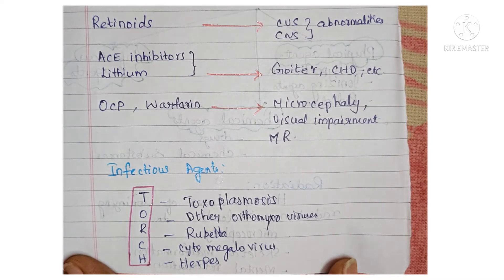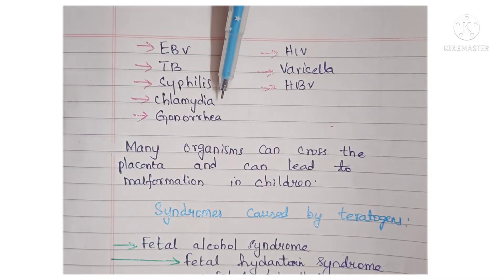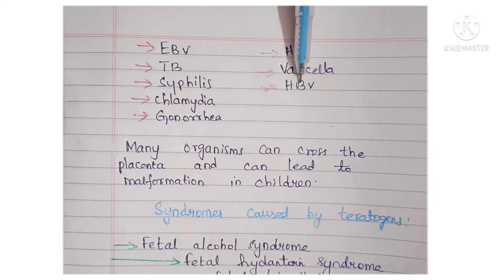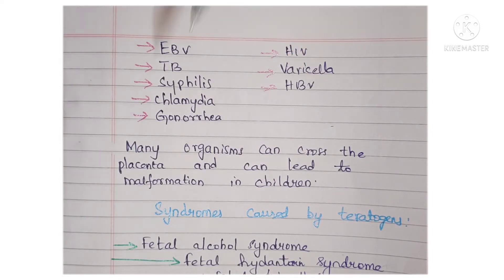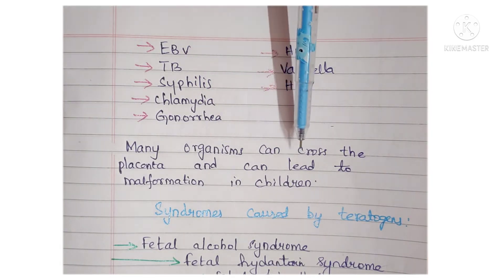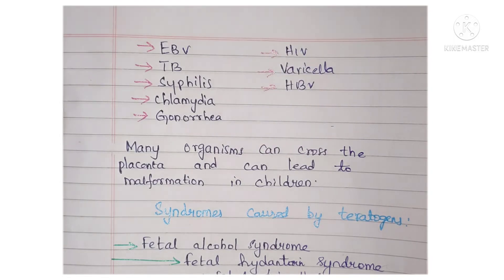There are many other infections including Epstein-Barr virus, tuberculosis, syphilis, chlamydia, gonorrhea, HIV, varicella (chickenpox), hepatitis B virus, and hepatitis C virus, and so on. Many organisms can cross the placenta and lead to malformations in children.